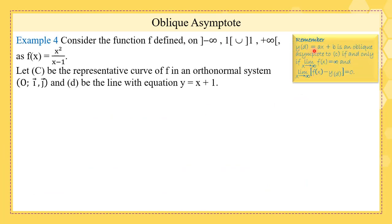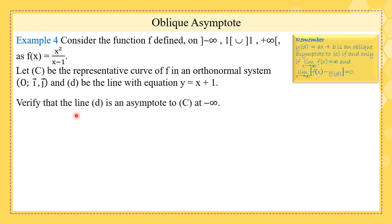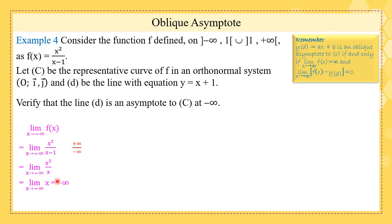Now oblique asymptote: the line y equals ax plus b is an oblique asymptote if and only if the limit at infinity of the function is infinity, and the limit at infinity of f(x) minus y of the line is zero. We have a function f whose curve is C and a line D with equation y equals x plus 1. The question is to verify that D is an asymptote to C at minus infinity. The limit at minus infinity of f(x) is the limit of x²/(x−1), which using the leading term gives the limit of x, which is minus infinity.